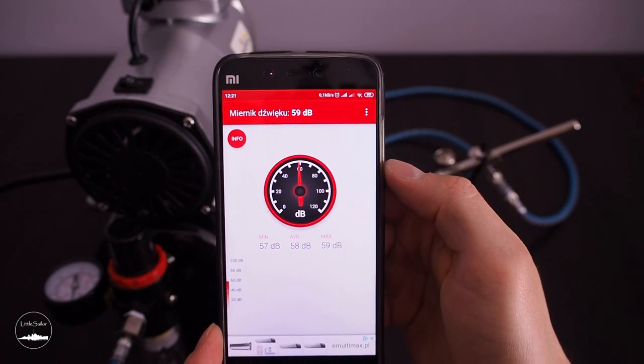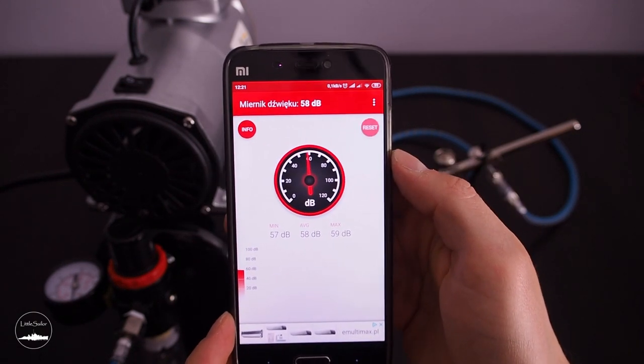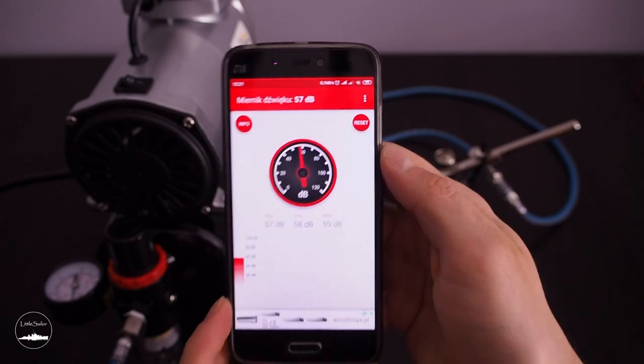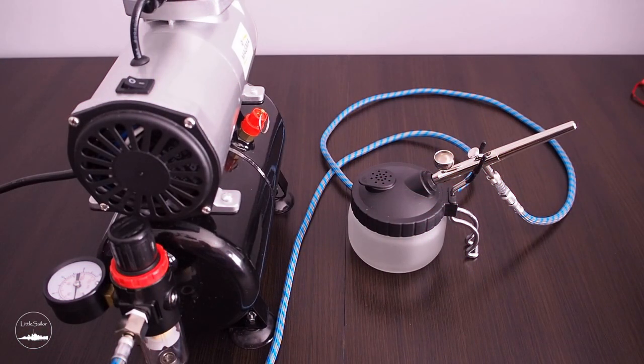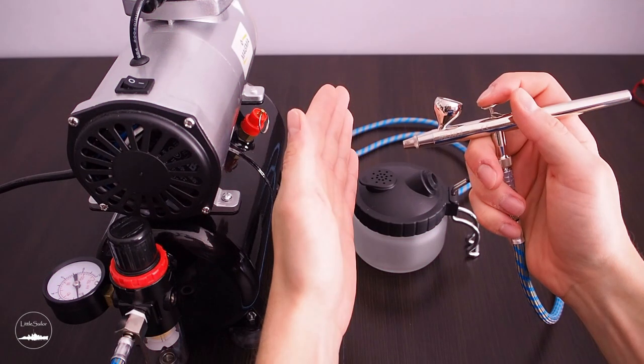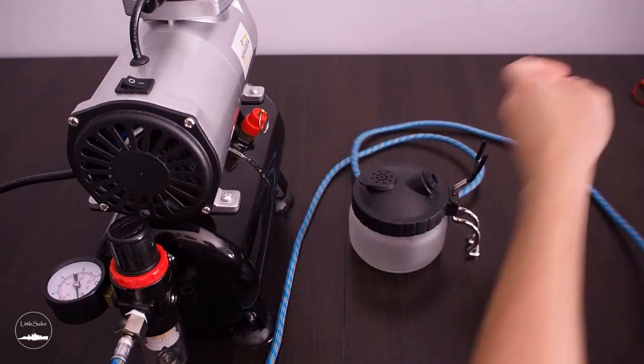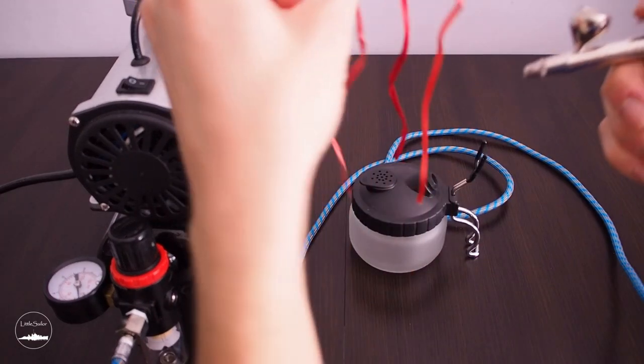In this model after switching on the compressor filling a tank to 4 atm takes about 80 seconds. In this point the pressure switch turns off the engine. Due to the fact that we have a compressed air stored in the tank we can work in silence without the engine running.